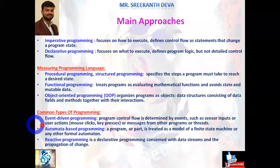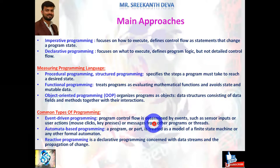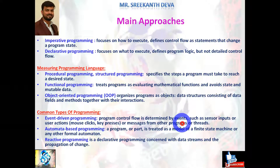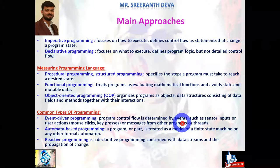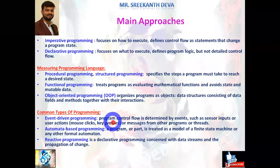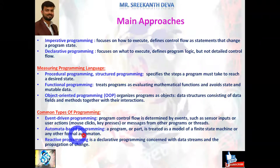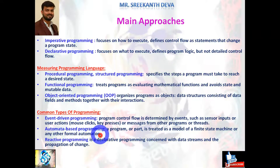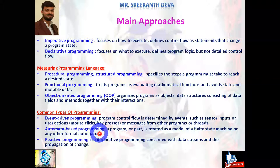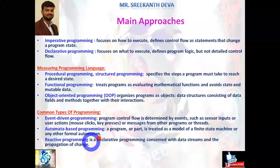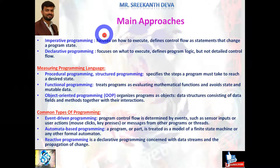Some other common types of programming include event-driven programming, where program control flow is determined by events such as sensor inputs, user actions like mouse click events or key press events, or messages from other programs or threads. Automata-based programming treats a program as a model of a finite state machine or other formal automaton, used in automation. Reactive programming is a declarative programming paradigm concerned with data streams and the propagation of changes.